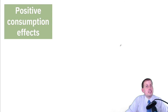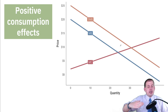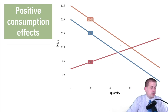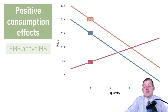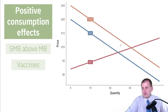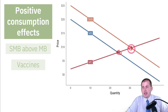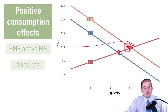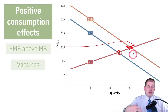You can also have externalities from the consumption side or the demand side. Instead of moving the marginal cost up and down, we're moving the marginal benefit — the demand curve. For positive consumption externalities, the social marginal benefit is above the regular marginal benefit. Vaccines are an example: we're currently at one level, but we want to be at a higher level where society is better off because more people are vaccinated. We might need government subsidies to increase vaccine use and achieve more societal benefit.